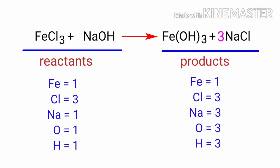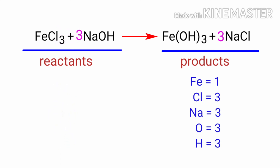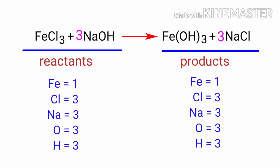Now we need to balance the Sodium, Oxygen, and Hydrogen atoms. To do this, we need to put a coefficient of three in front of NaOH. The equation is now balanced. There are one Iron atom, three Chlorine atoms, three Sodium atoms, three Oxygen atoms, and three Hydrogen atoms on both sides.